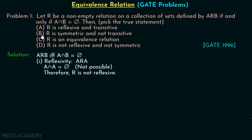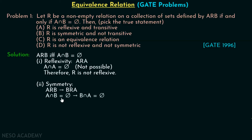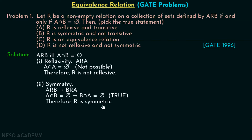Now let's see option B, which states R is symmetric and not transitive. For symmetry, A related to B must imply B related to A. If A is related to B, then A intersection B is the empty set. Similarly, B related to A means B intersection A is the empty set. Since A intersection B equals B intersection A, this is always true. Therefore, R is symmetric.